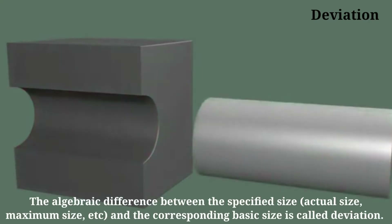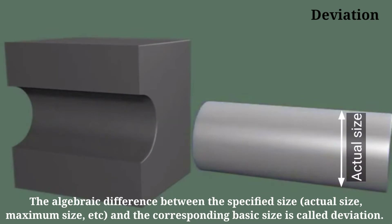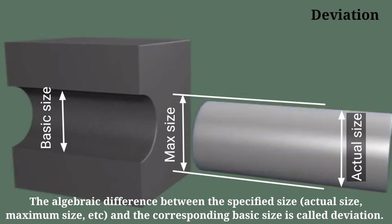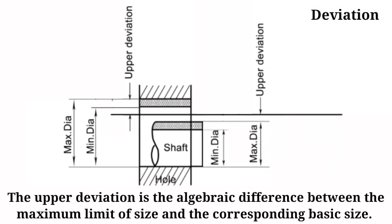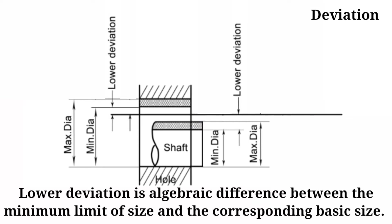Deviation. The algebraic difference between the specified size — that may be actual size, maximum size, etc. — and the corresponding basic size is called deviation. The upper deviation is the algebraic difference between the maximum limit of size and the corresponding basic size. The lower deviation is the algebraic difference between the minimum limit of size and the corresponding basic size.